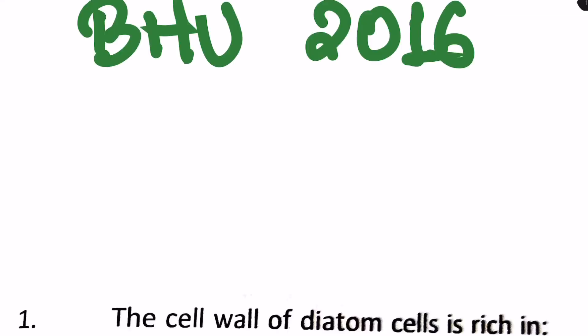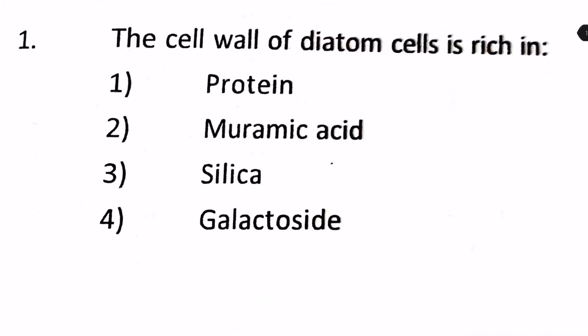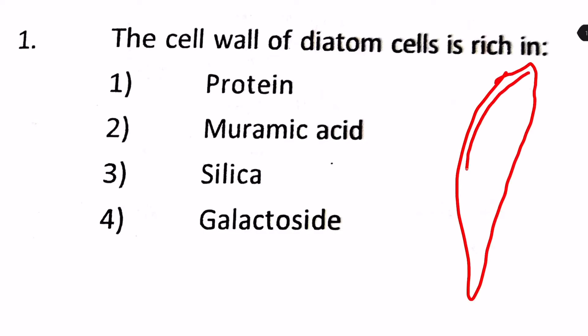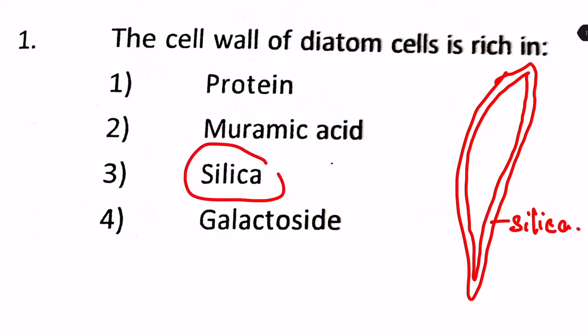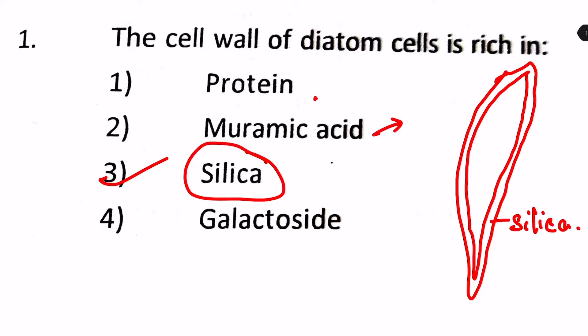Now we are going to solve the 2016 BHU questions on algae. First: the cell wall of diatom cells is rich in what? Diatoms have thick walls made up of silica. These remain after diatoms die and form deposits. Silica is the correct answer, not protein. Muramic acid is present in the cell walls of bacteria, not algae. Galactoside is not found in the cell walls of any lower groups of plants. So the answer is silica.